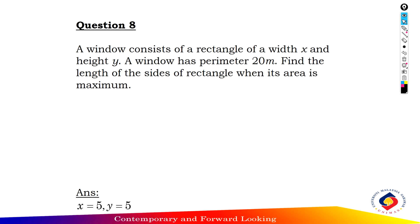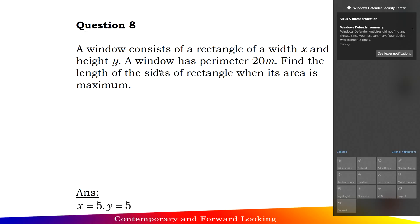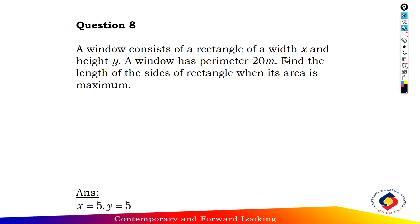Question: A window has a perimeter of 20 meters. Find the length of the sides of the rectangle when the area is maximum. The first piece of information is that the perimeter of the window equals 20 meters.